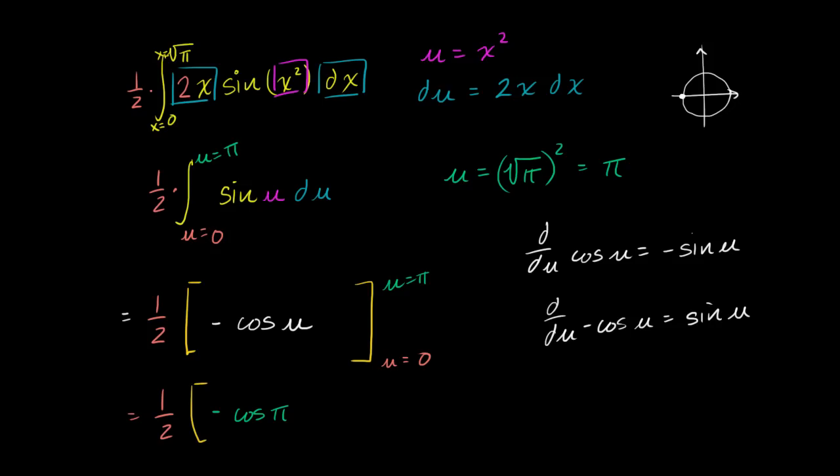And then from that, we are going to subtract this evaluated when u equals 0. So minus negative cosine of 0, not cosine of theta. That's what it's going to be equal to. And now we're ready to evaluate it.